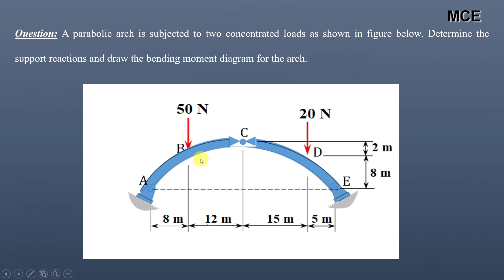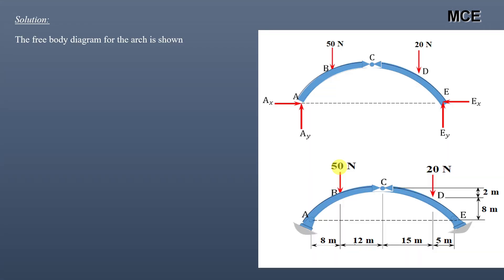This is a three-hinged parabolic arch with two hinges at A and E, and the third one at the top at point C. There are two concentrated loads acting on this arch — one having magnitude 50 newtons and another having magnitude 20 newtons. The total rise of this arch is 8 plus 2, which is 10 meters. First, you will draw a free body diagram of this arch.